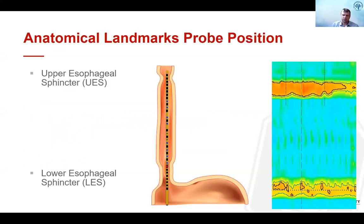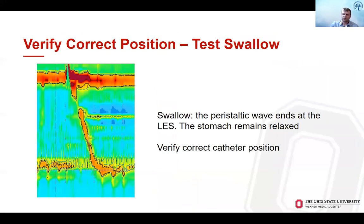When placing the probe, it is placed transnasally, then the patient swallows the probe and you pass it down the entire length of the esophagus and into the stomach. Using the on-screen guidelines, you can find the pressure at the upper and lower esophageal sphincters and ensure the probe is placed across both sphincters with pressure sensors at those levels. To verify the correct position, you can have the patient take a test swallow — you can see the initiation of the swallow, the peristaltic wave, and relaxation and re-contraction of the LES, confirming the catheter is in the right position.